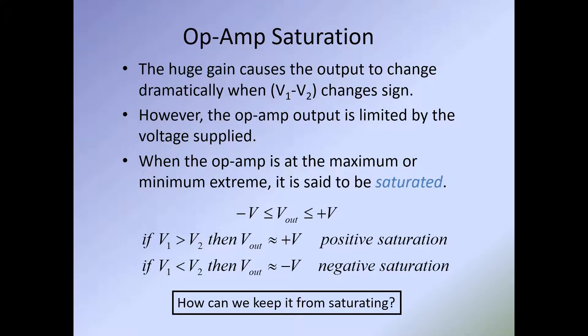The huge gain causes the output to change dramatically when V1 minus V2 changes sign. The output is limited by the supply voltage. When the op amp is at the maximum or minimum extreme, it is said to be saturated. Here are the positive saturation values and negative saturation values as an overview.